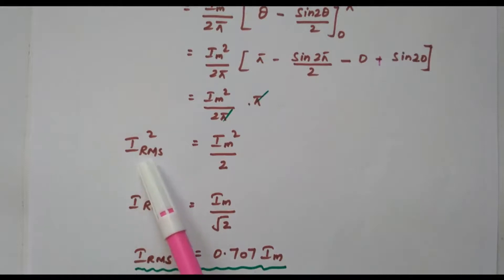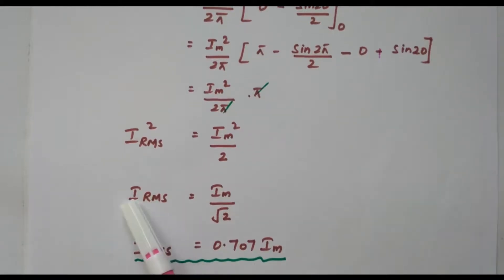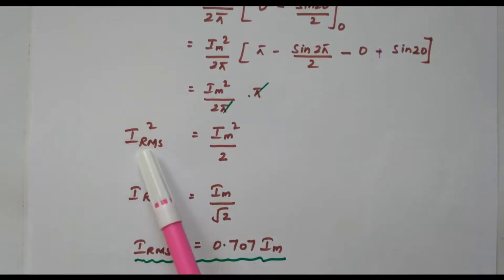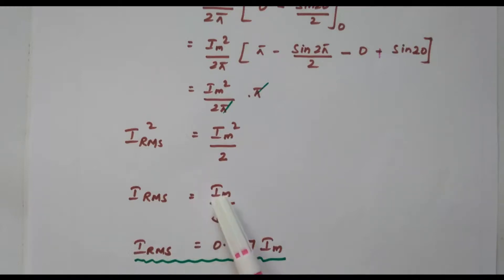So IRMS² = Im²/2. Taking the square root on both sides: IRMS = Im/√2. The square root of Im² is Im and the square root of 2 remains. Simplifying, 1/√2 = 0.707, so IRMS = 0.707·Im. The RMS value of current for a full wave rectifier is 0.707·Im.